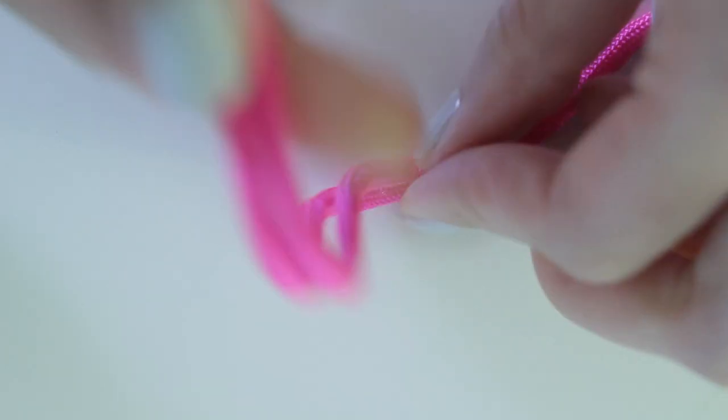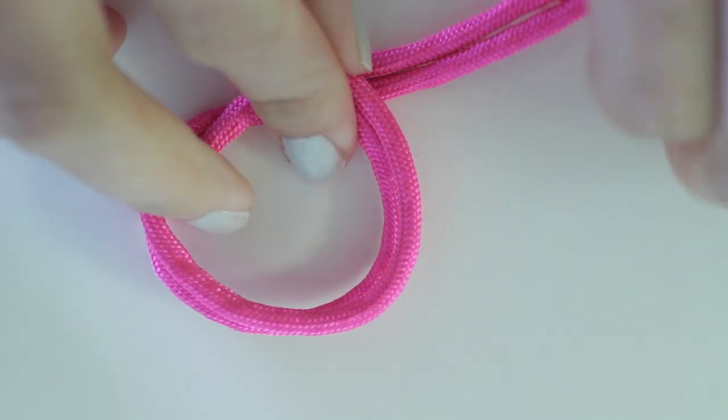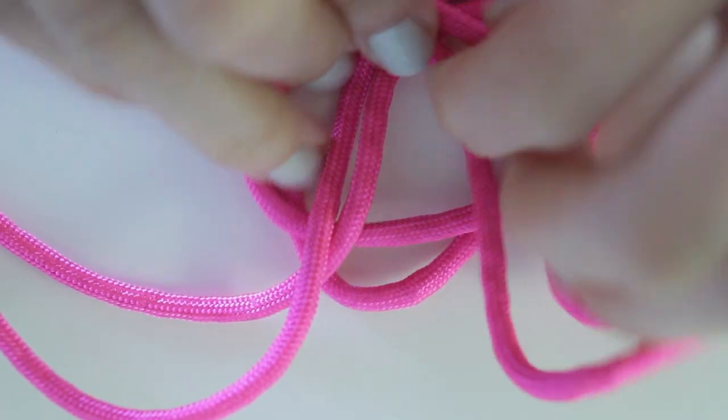Find the center of the two pieces of string and you're going to create a loop. It kind of looks like a pretzel or regular knot. Both ends are going to be on top of the loop.